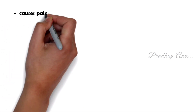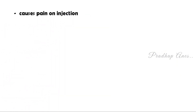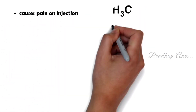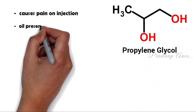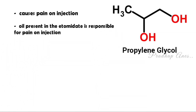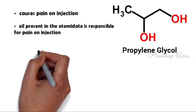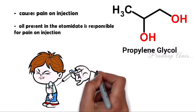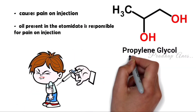When we introduce etomidate, it causes pain on injection. The solvent present in the etomidate is responsible for pain on injection. It can damage vascular endothelial cells. This pain on injection is less when compared to propofol.